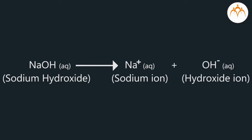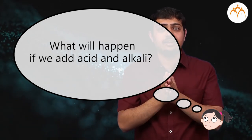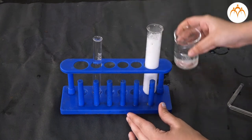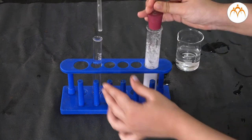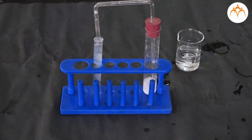Alkalies give hydroxide OH− ions in their water solution. For example, sodium hydroxide's water solution gives sodium ion and hydroxide ion: NaOH (aqueous) gives Na+ (aqueous) plus OH− (aqueous). What will happen if we add acid and alkali? When sodium carbonate reacts with concentrated hydrochloric acid, carbon dioxide gas is released.